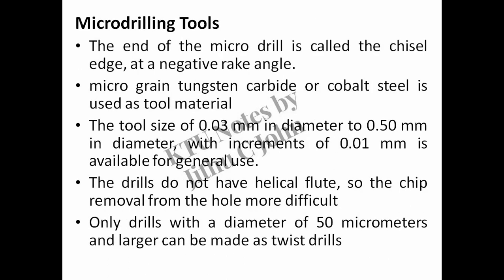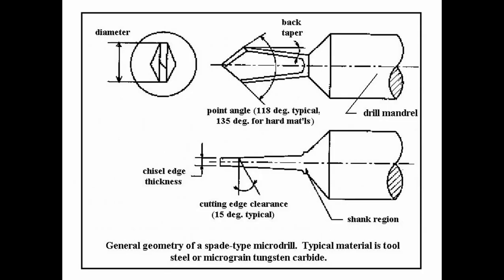The end of the microdrill is called the chisel edge, at a negative rake angle. Micrograin tungsten carbide or cobalt steel is used as tool material. Tool sizes range from 0.03 mm to 0.50 mm in diameter, with increments of 0.01 mm available for general use. The drills do not have helical flutes, making chip removal from the hole more difficult. Only drills with a diameter of 50 micrometers and larger can be made as twist drills. The figure shows the general geometry of a spade type microdrill; typical material is tool steel or micrograin tungsten carbide.